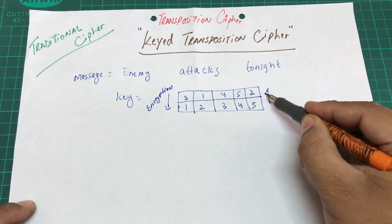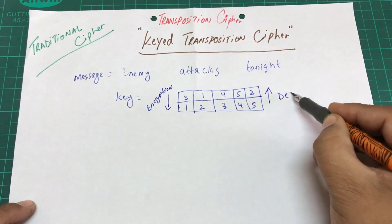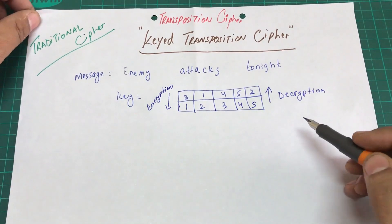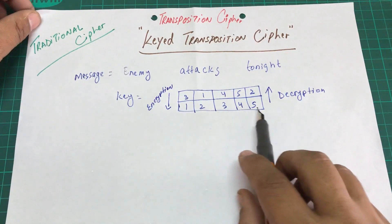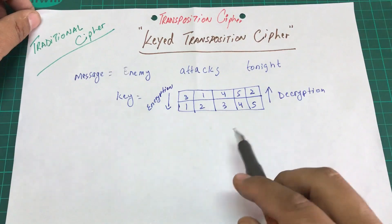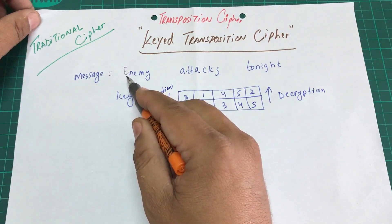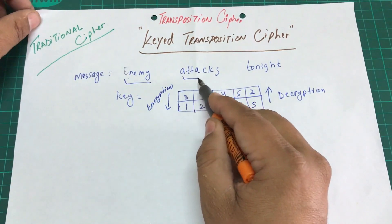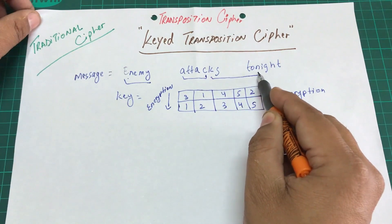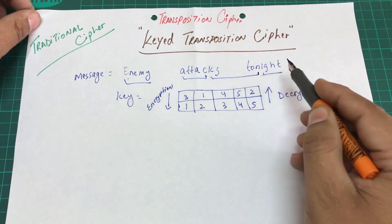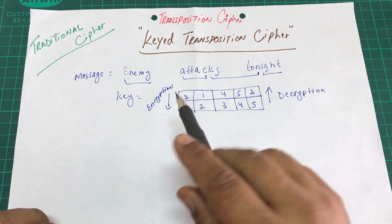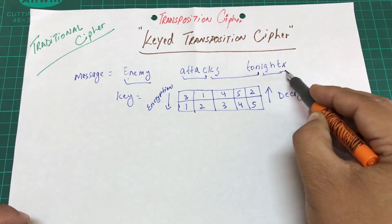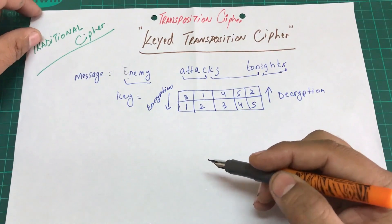For encryption we go from top to bottom, and for decryption we go from bottom up. We arrange the message into groups of five letters. So 'enemy attacks tonight' is split into groups of five. Since the last group only has four letters, we add a bogus character 'X' at the end.